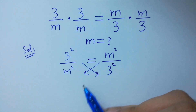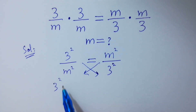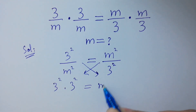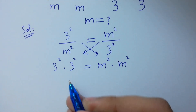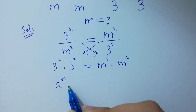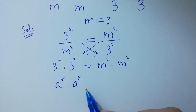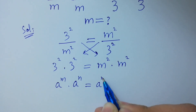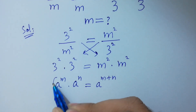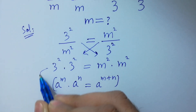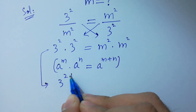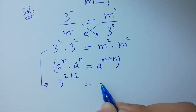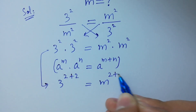3 squared times 3 squared equals m squared times m squared. Using the rule a to the power m times a to the power n equals a to the power m plus n, this gives 3 to the power 2 plus 2 equals m to the power 2 plus 2.